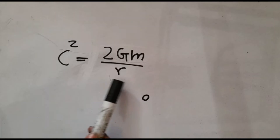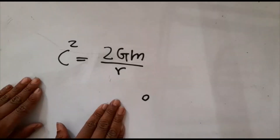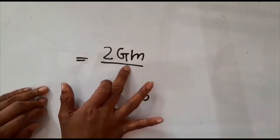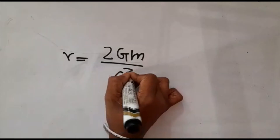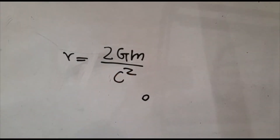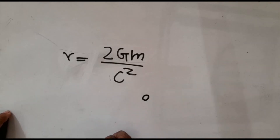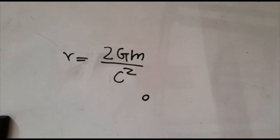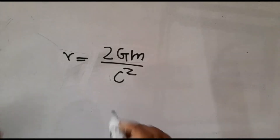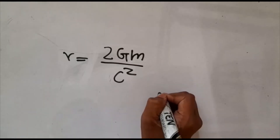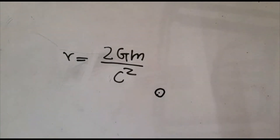Here, G is Newton's gravitational constant, M is the mass of the object, and r is the radius of that object. Rearranging this equation and solving for r, we get r equals 2GM over c squared. What will happen is that this object will collapse under its own weight because of the insane intensity of force, and all of the mass will get concentrated at an infinitely small point called the singularity.